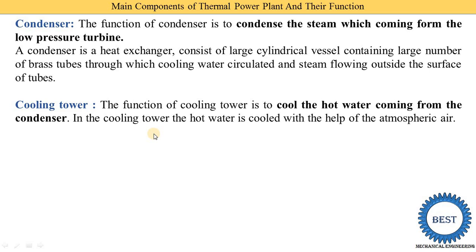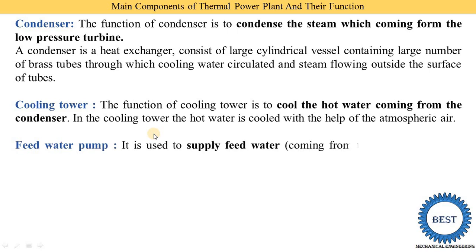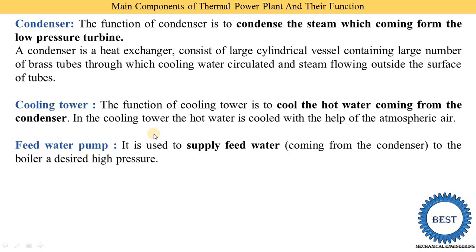In the cooling tower, hot water is cooled with the help of atmospheric air. Another component is the feed water pump, which is used to supply feed water to the boiler at the desired pressure. The water is not supplied at atmospheric pressure — the feed water pump increases the pressure of the feed water before it is supplied to the boiler.